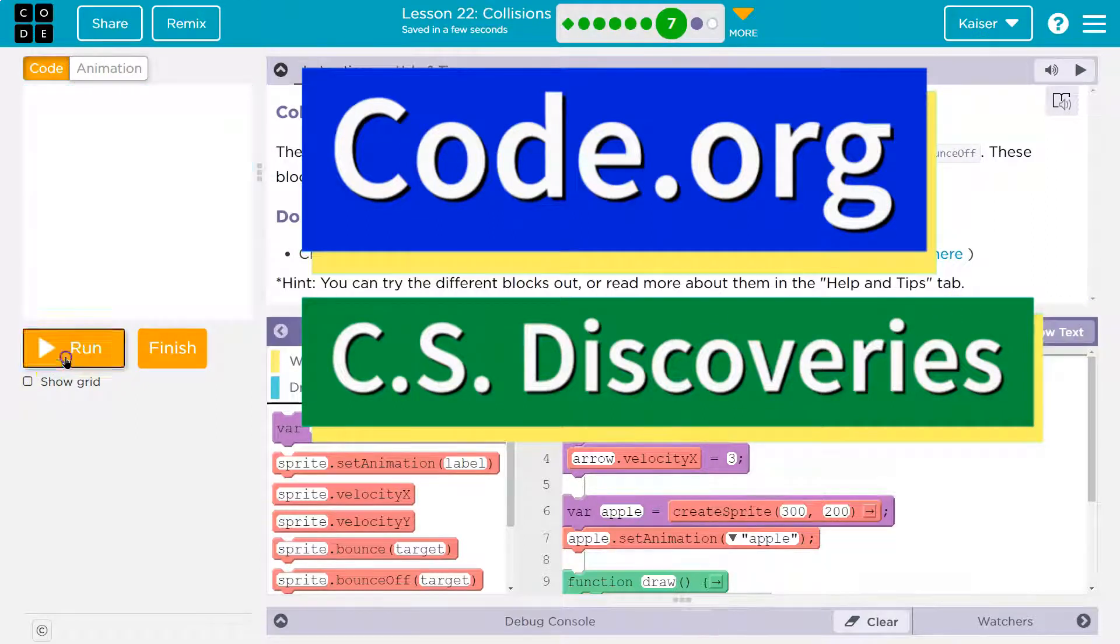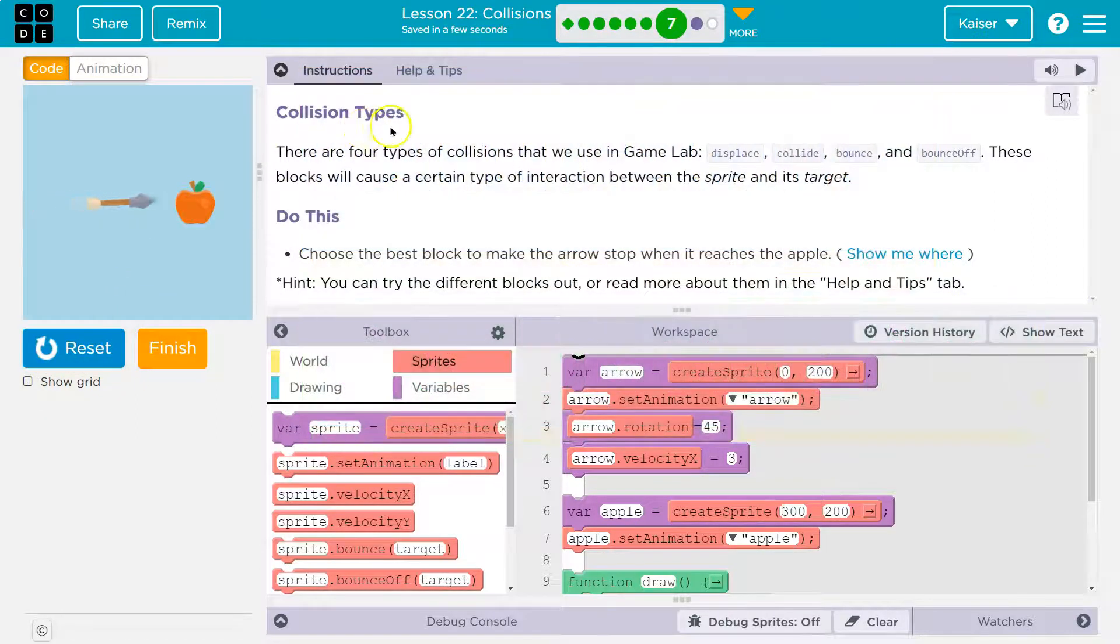This is code.org. Let's see what we're doing. Let me hit reset. Oh yeah, the arrow. Collision types.